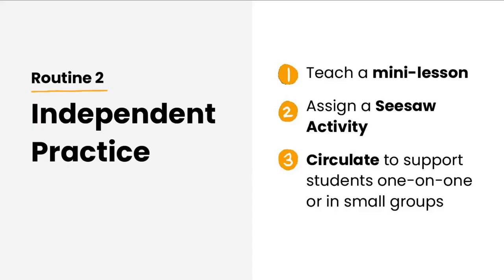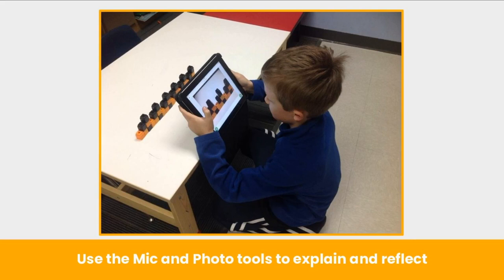Routine number two is independent practice. Seesaw can also be used to provide opportunities for students to practice grade level skills on their own. Start by teaching a mini lesson, then assign a Seesaw activity and make sure to circulate to support your students one on one or in small groups as they work. In this example, students were working on creating patterns. Students use the camera to capture the pattern they created and use the microphone to tell more about what they created. Teachers can go back and view each student's learning once students submit work, giving them the feeling that they are in 25 places at once.